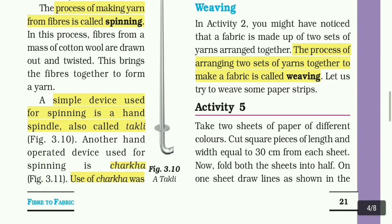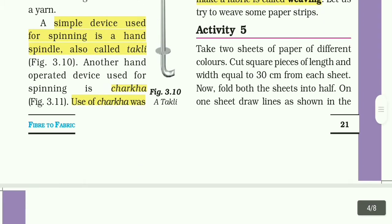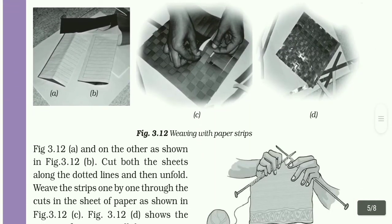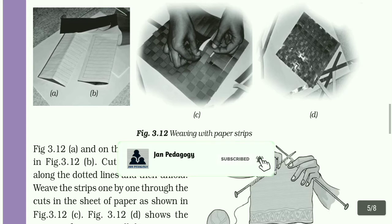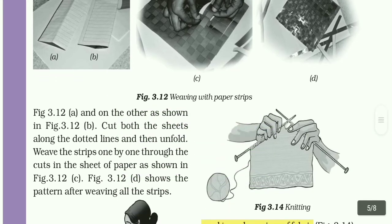Activity 5: Take two sheets of paper of different colors. Cut square pieces of length and width equal to 30 cm from each sheet. Now fold both sheets in half. On one sheet draw lines as shown in figure 3.12a and on the other as shown in 3.12b. Show the pattern after weaving all strips.